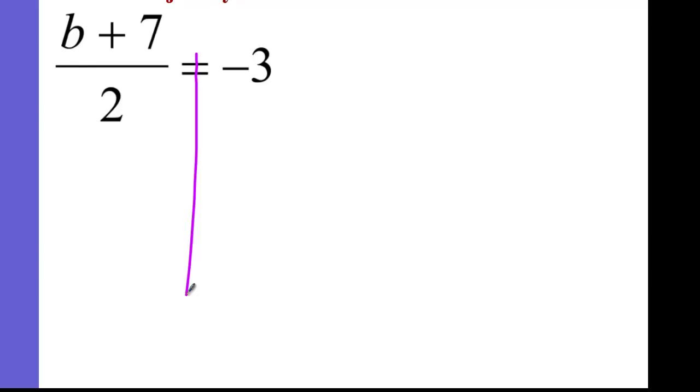So the two, we just multiply by 2. Multiply by 2. What happens here is this two will cross out this two. So that's gone. And then what you have left with is just that. So we have b plus 7 equals negative 3 times 2 is negative 6.